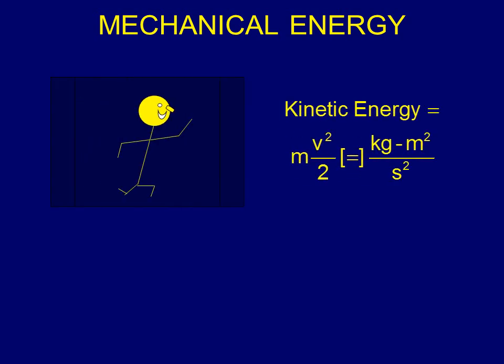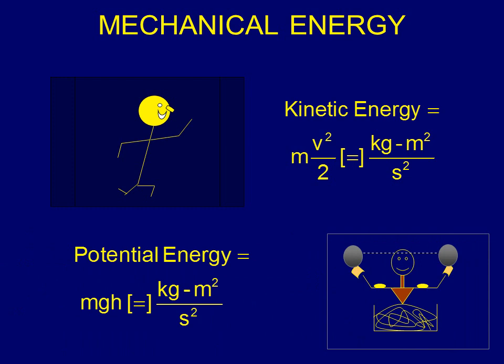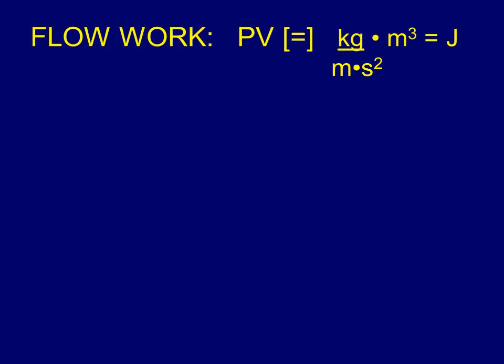Let's look at mechanical energy. Kinetic energy — kinetic meaning motion — is mass times v squared over two, which has units of kilogram meter squared per second squared, or joules. Potential energy is the energy from raising a weight: mass times g times h — force through a distance — also giving joules. Another form is p times v, which also gives joules.